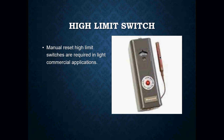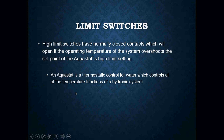This device sits on a pipe or in a well inside the boiler itself and monitors the water temperature of that appliance. If there is an issue where we get too high a temperature, this little red button will pop out and open the contacts, which will shut off your burner. The only way it can be turned back on is if somebody manually pushes that button back in to close the contact again. High limit switches have normally closed contacts which will open if the operating temperature overshoots the set point.